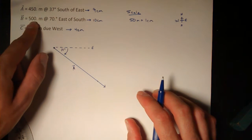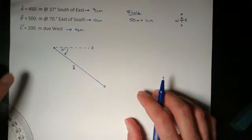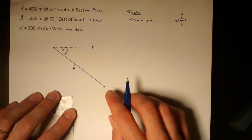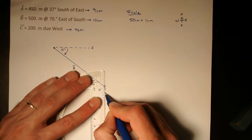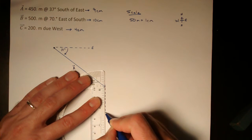Vector B now is 500 meters at 70 degrees east of south. And so from the head of my first vector, I draw a line that is directly south. This will be a dotted line that I'll use to measure 70 degrees east of.